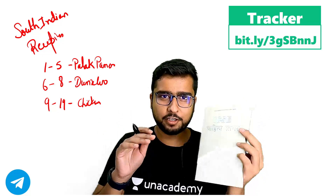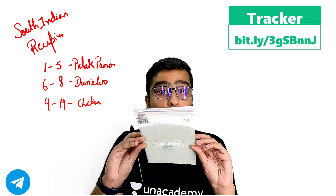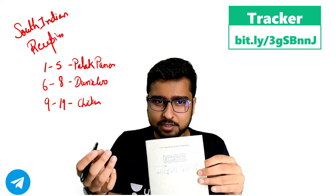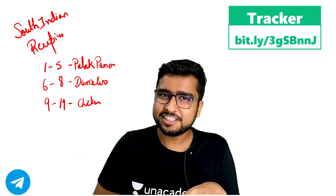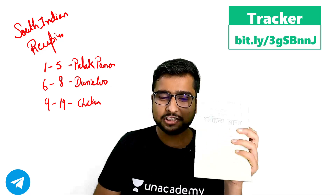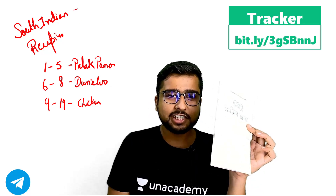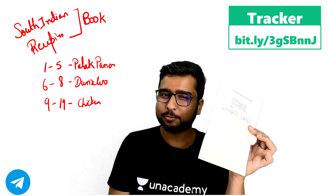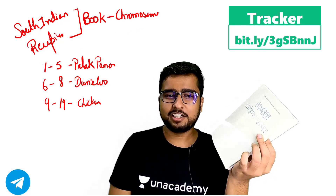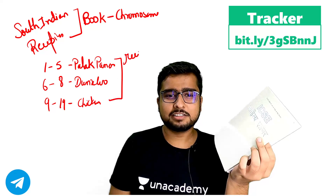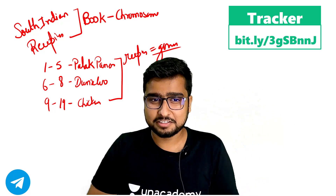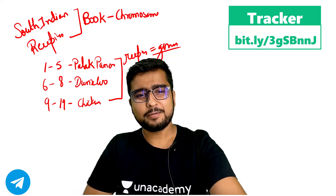So this book is a chromosome — yeh book ek chromosome hai. And on this chromosome there are recipes. What are recipes? They are instructions — banane ka tariqa. Similarly, this South Indian recipe book is a chromosome, and the recipes we see in this chromosome — these recipes are genes. These recipes are genes.